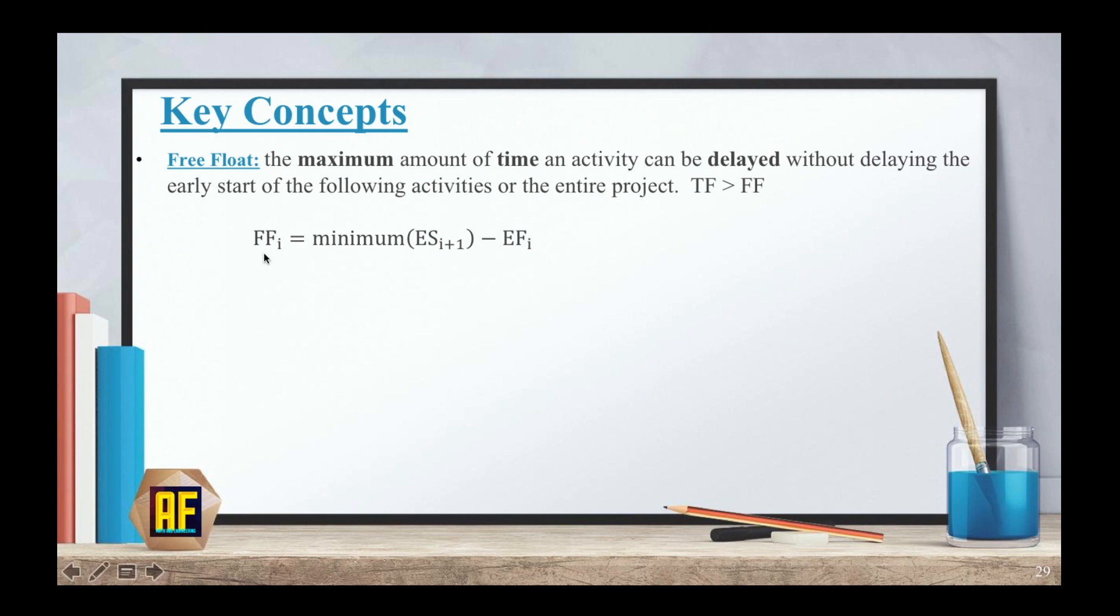Now regarding the equation for the FF. Our equation says that FF of I, I is just a representation of any letter of the activities, equals the minimum ES_I+1 minus EF_I. So I will go over this equation in a minute with an example, but two more key conditions here. If the equation of FF results in a negative number, we should regard it as 0. And like I said before, the total floats should always be bigger than the free floats.